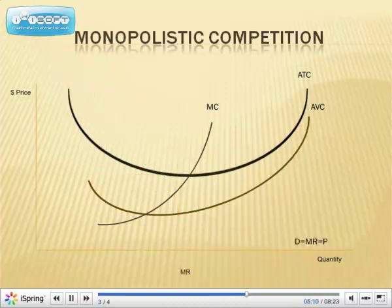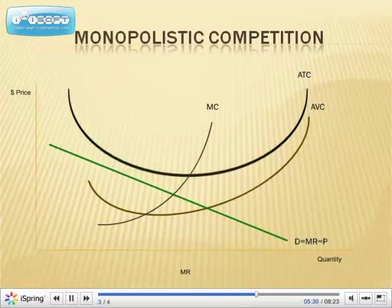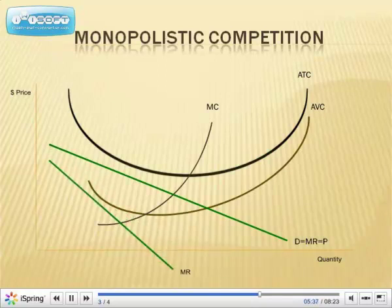We've got a monopolistically competitive firm that was making profits. As a result of every firm making profits, that attracts more competition. With more competitors, they're going to lose some of their customers — a decrease in their market share. Their demand curve is going to shift to the left because they have a decrease in the number of buyers. The marginal revenue curve associated with that will also shift to the left. Again, a reminder: the marginal revenue curve goes into negative numbers.